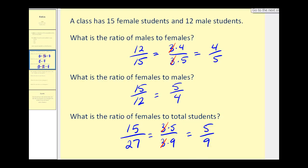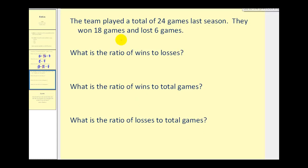Let's take a look at another example. The team played a total of 24 games last season. They won 18 games and lost 6 games.